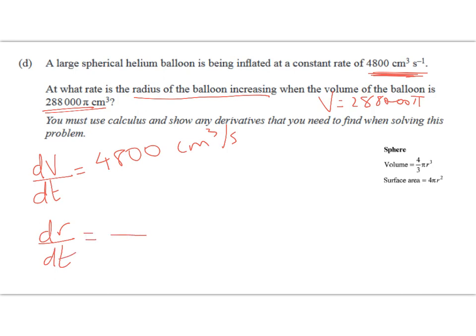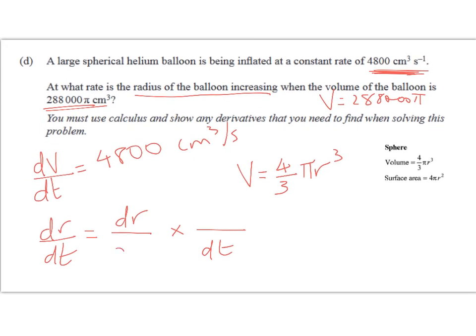We can set up a chain rule relationship which is how we always do related rates problems. We're going to have dt at the end and dr here. What do we know that's going to link the volume and the radius? We've got an expression on the formula sheet: v equals 4 thirds pi r cubed, and that's what we're going to work with.